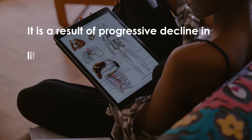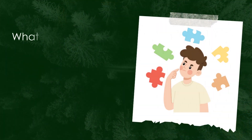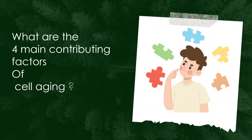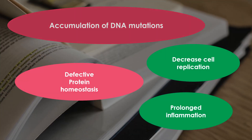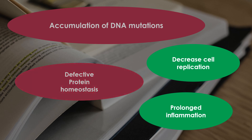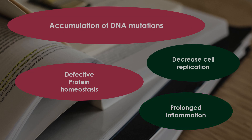Cell aging is a result of progressive decline in the lifespan and functional capacity of cells. What are the four main contributing factors of cell aging? The four main contributing factors are: accumulation of DNA mutation, defective protein homeostasis, decreased cell replication, and prolonged inflammation.